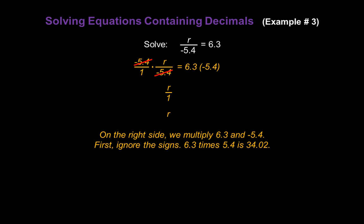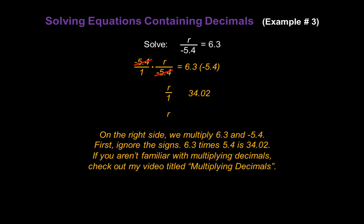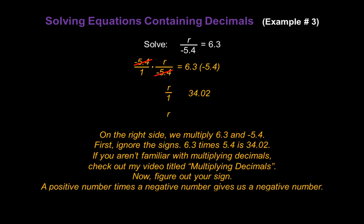On the right side, all we have to do is multiply 6.3 and negative 5.4 to finish the problem. First, ignore the signs — let's do 6.3 times 5.4, which gives us 34.02. Now, if you aren't familiar with multiplying decimals, check out my video titled Multiplying Decimals. Now figure out the sign on your answer: a positive number times a negative number gives us a negative number. So we'll have negative 34.02 on the right. Therefore, r equals negative 34.02 is our answer.